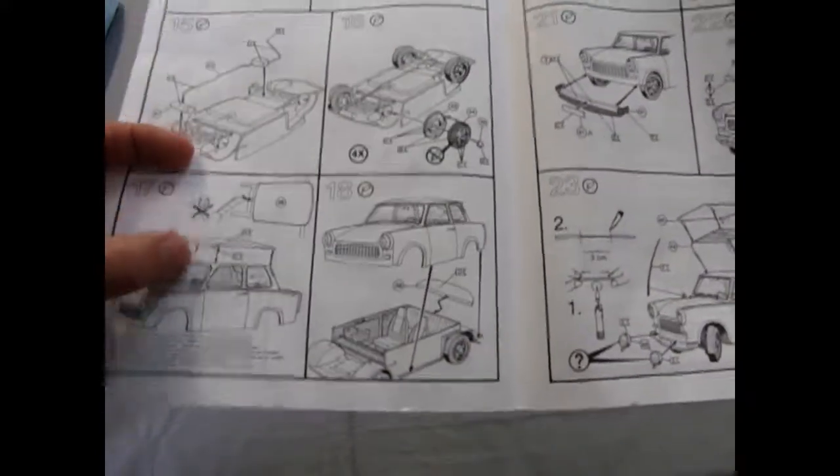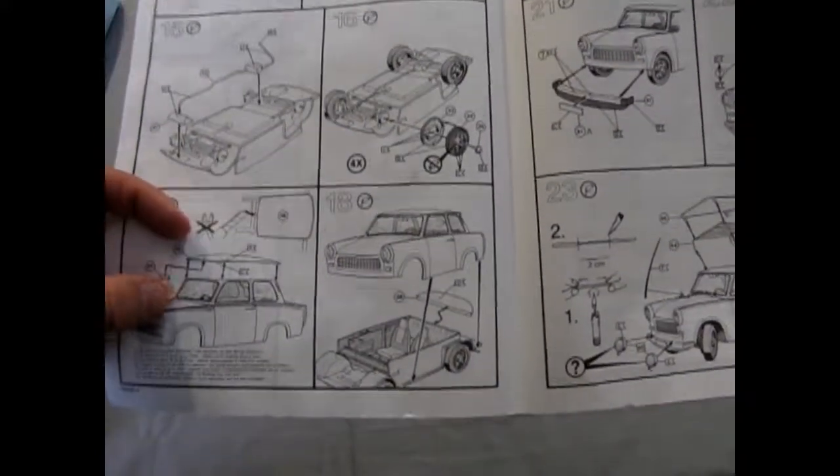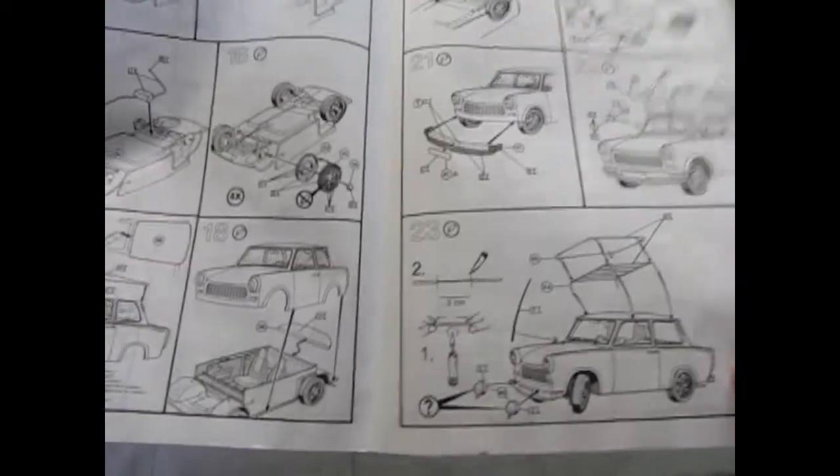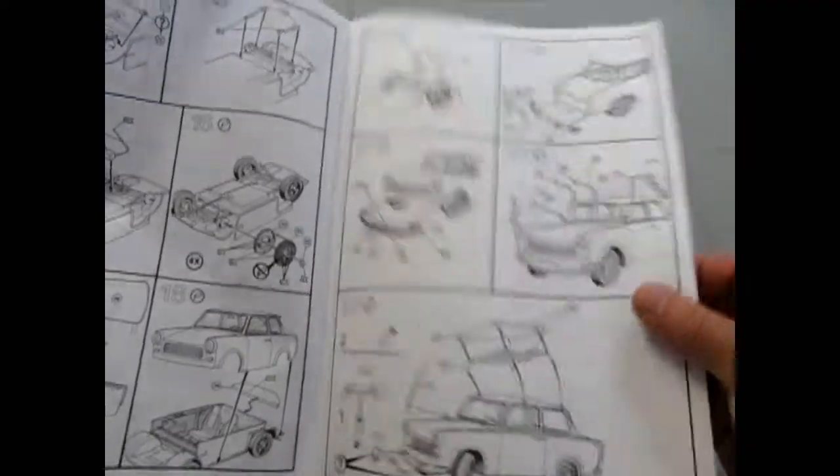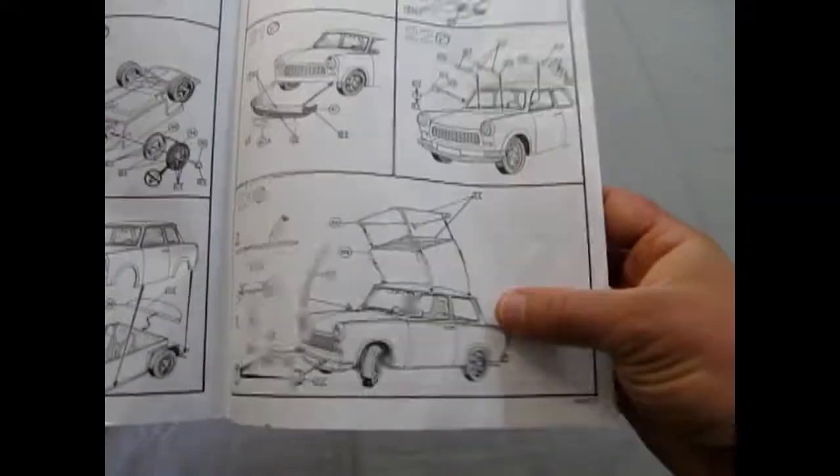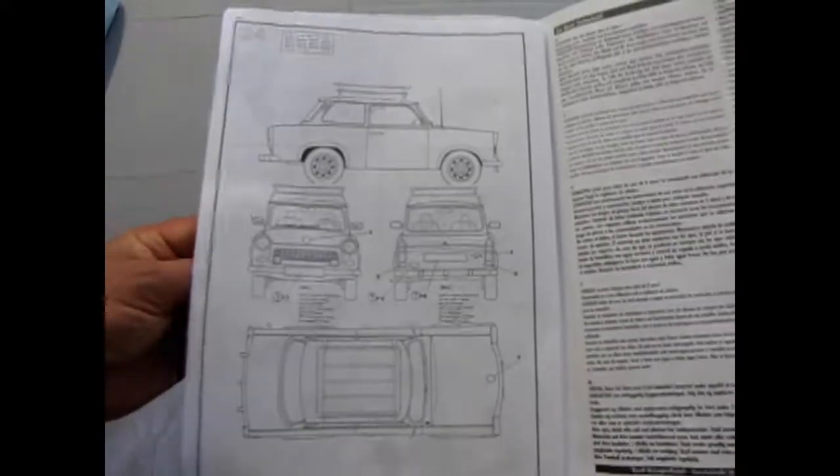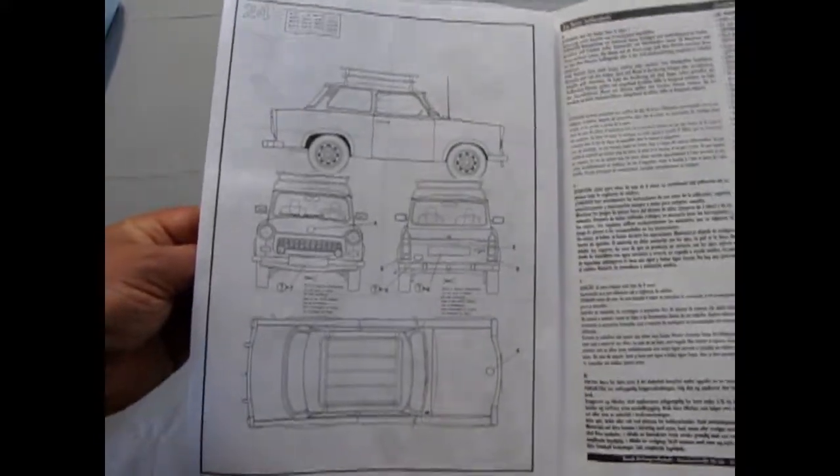So the roof actually is a separate piece that you cut out and glue to the roof of the car, which we will take a look at in a minute here. Yeah, fairly simplistic. It also gives you this luggage rack on the top. And there is the drawing of the Trabant.